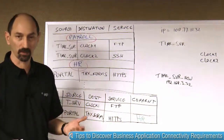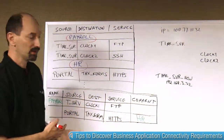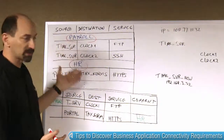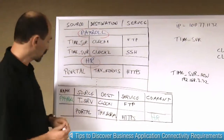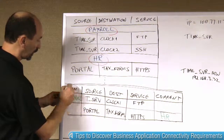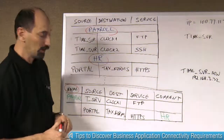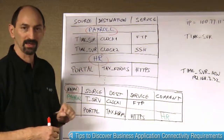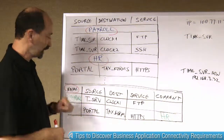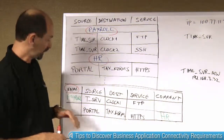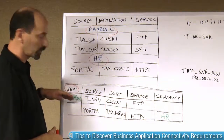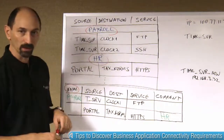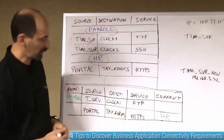If you don't have a Checkpoint but you have, let's say, a Juniper firewall, you could do a similar type of documentation but using the name column. Many firewalls allow you to include a name for each of the rules, and if you are in the habit of documenting the applications in the name column, you can rely on that information.